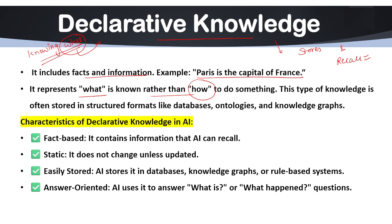For example, AI in a weather checking application knows that rain occurs when clouds become heavy with water droplets. AI stores this kind of knowledge in a database and uses it to answer questions. This type of knowledge is often stored in structured formats like databases, ontologies and knowledge graphs.